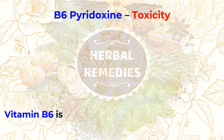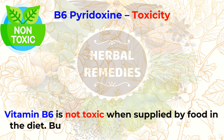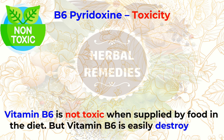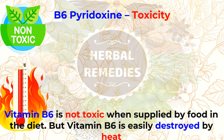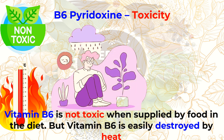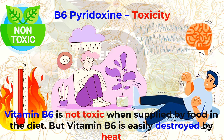Vitamin B6 is not toxic when supplied by food in the diet, but is easily destroyed by heat. Supplemental forms are usually in the form of pyridoxine hydrochloride. The upper safe limit for adults set by the Institute of Medicine is 100 milligrams; levels above this might cause neurological problems. Vitamin B6 deficiency causes depression and confusion, and in extreme deficiency, brain wave abnormalities and convulsions resulting in seizures.